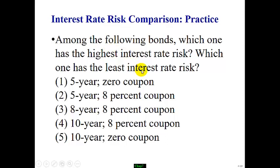For the least interest rate risk, we do the opposite — we look for the shortest maturity and the highest coupon rate.